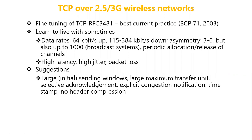What we will be discussing in this lecture is TCP over 2.5G and 3G wireless networks. The data rate of the 3G wireless network will be up to 64 kilobits per second in uplink, and in downlink it will range from 150 to 384 kilobits per second.